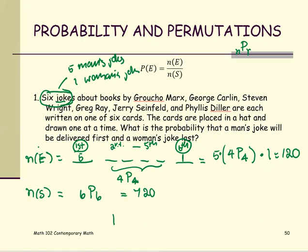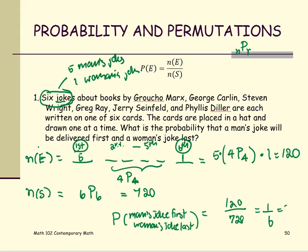So to find the probability of this event, which is the man's joke first and woman's joke last, it's going to be 120 divided by 720, or one over six, which is 0.1667 or 16.67%.